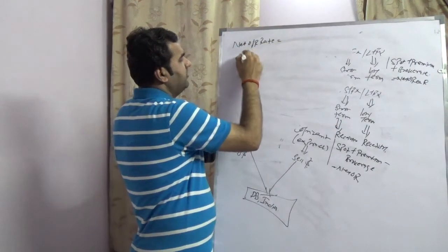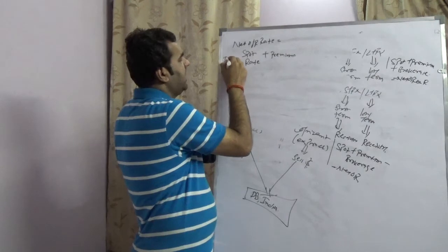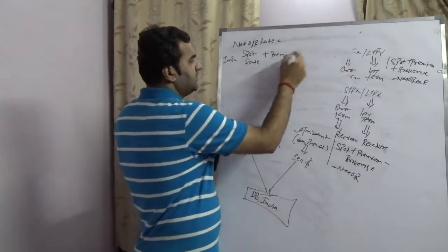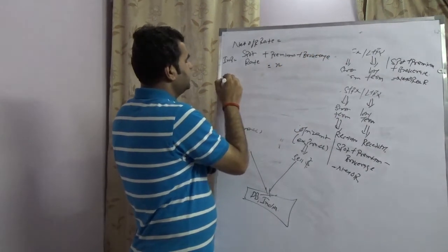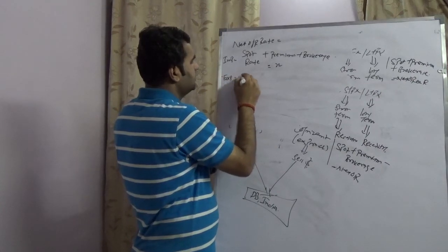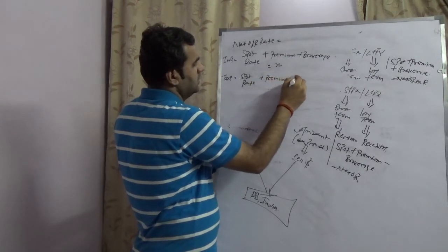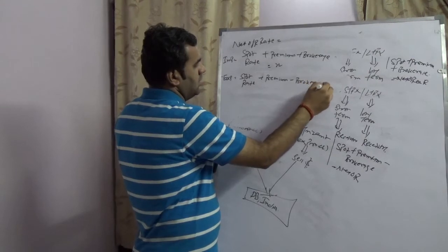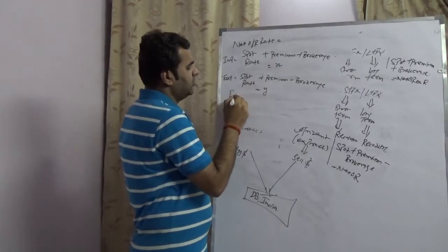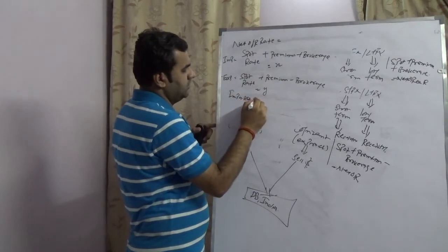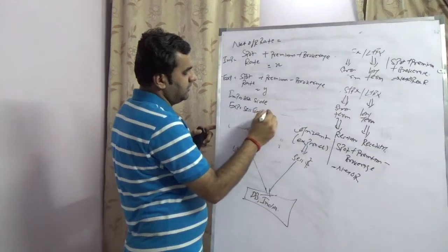The net outright rate would be calculated as: for an importer, spot rate plus premium plus brokerage, which gives X. In case of an exporter, it would be spot rate plus premium minus brokerage, which gives Y. The premium which an importer would receive is on the ask side, and an exporter would receive on the sell side premium, which is known as the bid side.